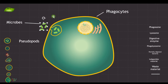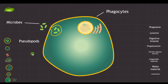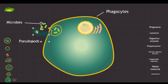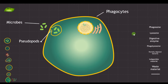Pseudopods are also known as 'false feet' because they are temporary, not permanent structures — they are arm-like extensions. As I draw them, you can see how they surround the microbe and cover it to pull it inside. These structures are called pseudopods, and they are the false feet or arm-like projections that help in the internalization of microbes. Pseudopods are also important for the motility and ingestion capabilities of phagocytes.